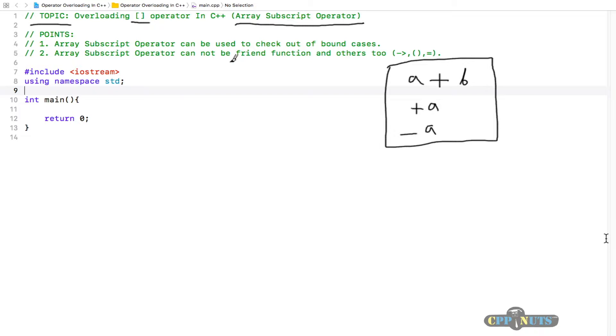The first point is the array subscript operator can be used to check out of bound cases. We can explicitly check whether we are going to access an array element which doesn't exist.